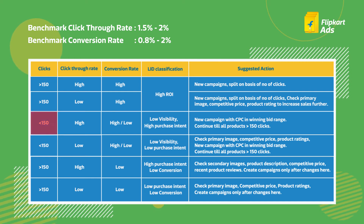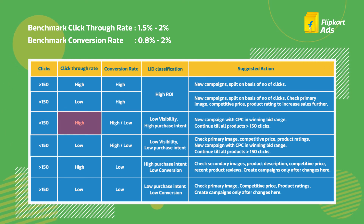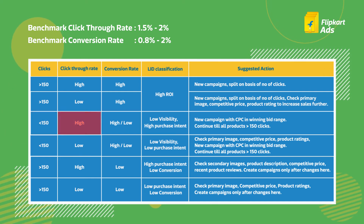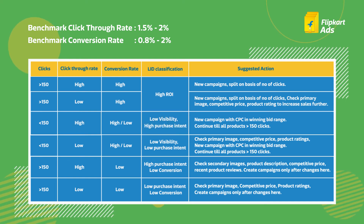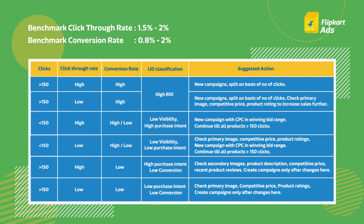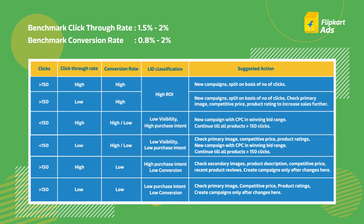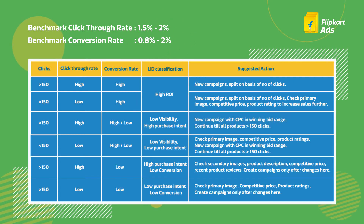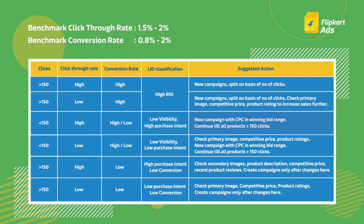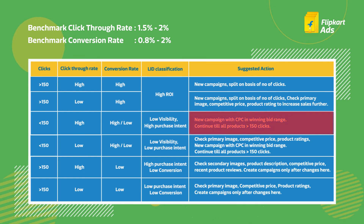Listings with less than 150 clicks and high click-through rate — these are your low visibility but high purchase intent listings. Create new campaigns with CPC in the winning bid range and continue until all products receive greater than 150 clicks.